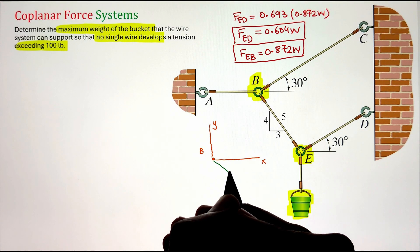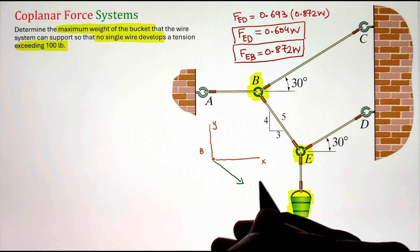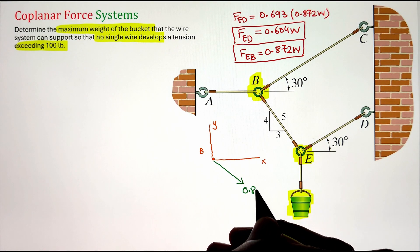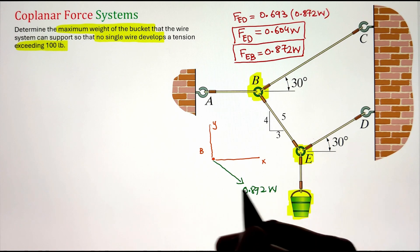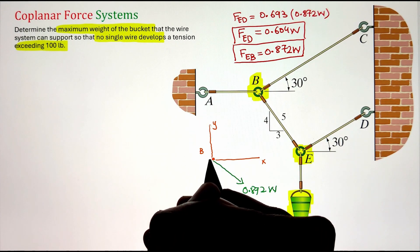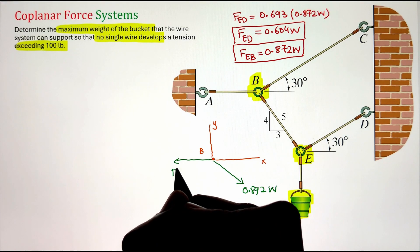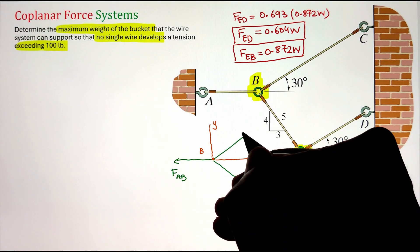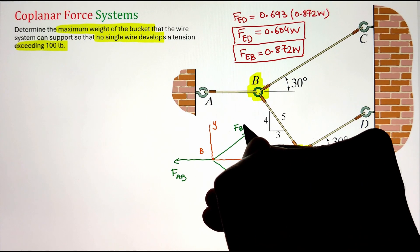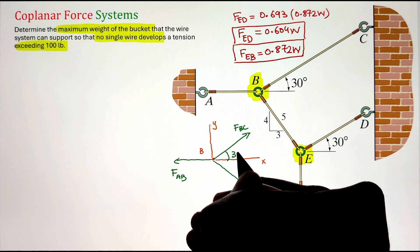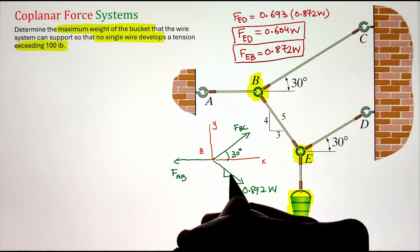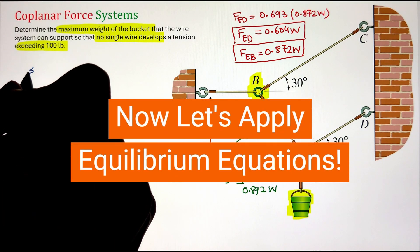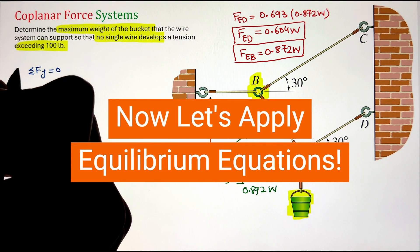Three wires are connected to joint B. Starting with the wire from B to E — we have already calculated the force developed in this wire as 0.872 times the weight of the bucket. Next, there is a wire going from B to A in the horizontal negative x-direction, given by FAB. And then we have a wire going from B to C making an angle of 30 degrees from the horizontal. Once we have listed all loads on the free body diagram, we can apply our equilibrium conditions.